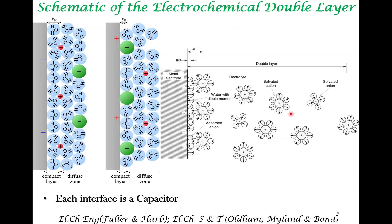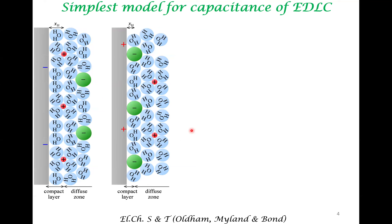What is important to understand is that each electrode-electrolyte interface has the capacity to store energy and acts like a capacitor. This has to be contrasted against the conventional electrostatic capacitor, where charge separation occurs via two electrodes. Here, a single electrode-electrolyte interface has the capacity to store charges, and one such interface acts like a capacitor.